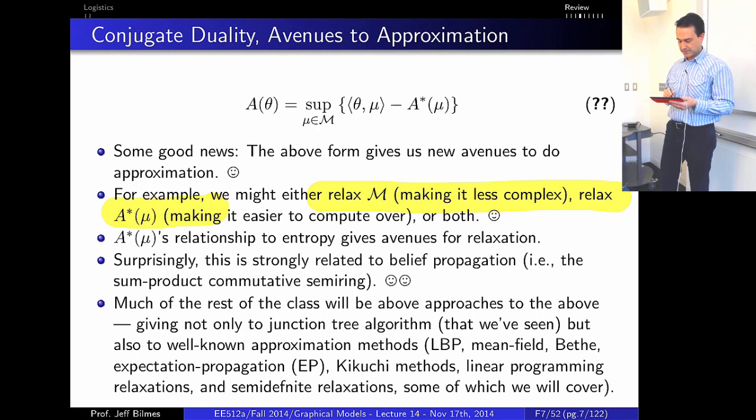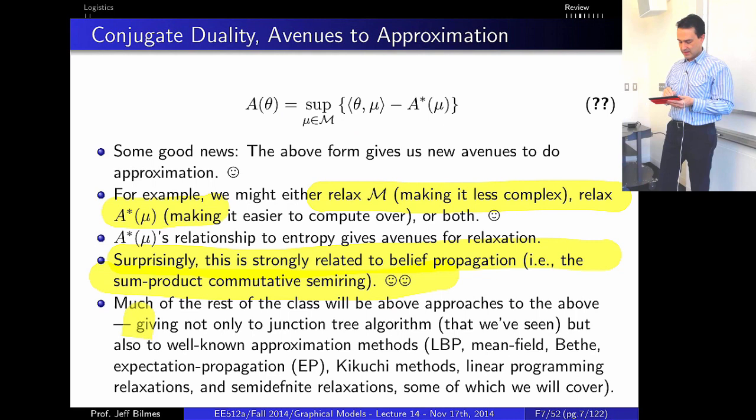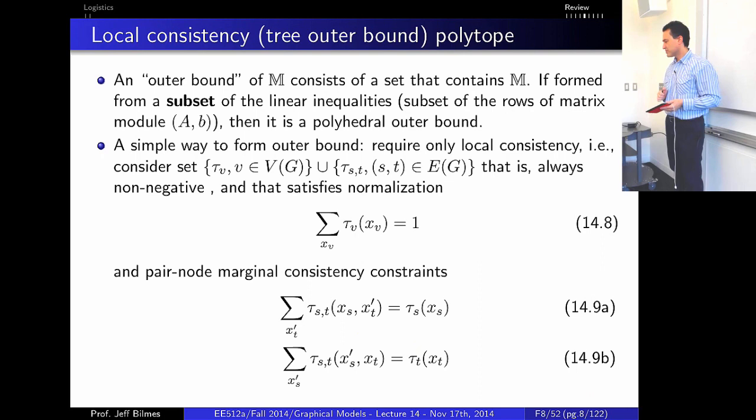What's amazing is that when we look at the Lagrangian form of this optimization, it gives us exactly the loopy belief propagation messages at a point of convergence. This basically gives us all these different approximate inference methods.